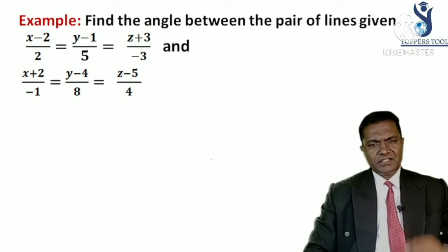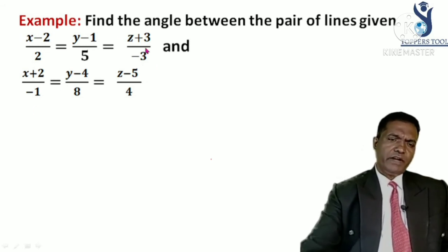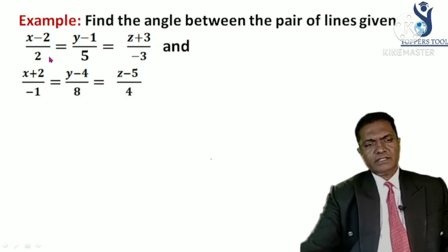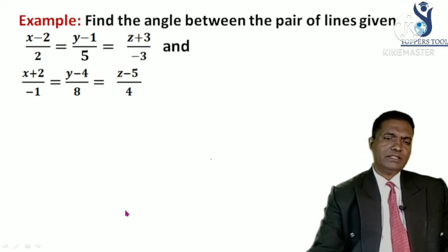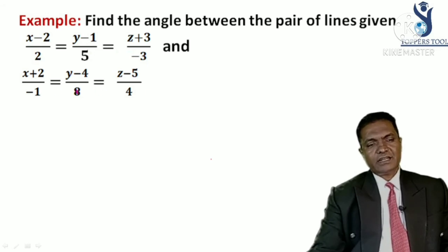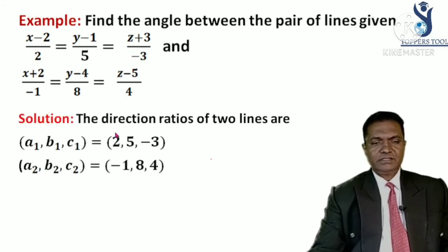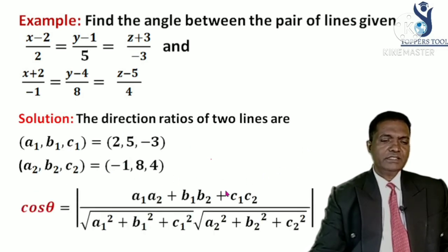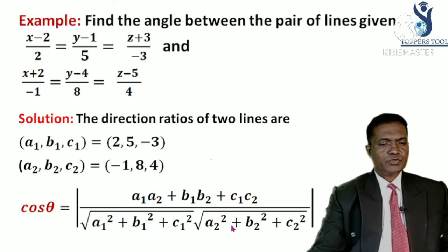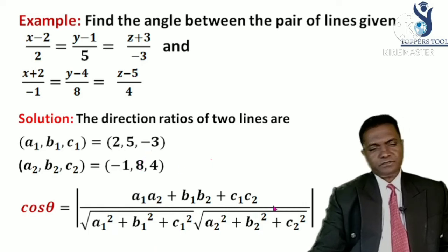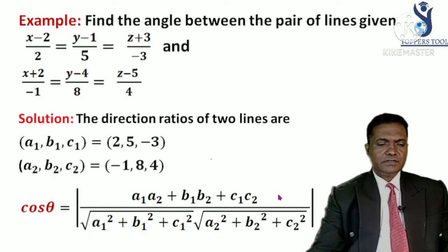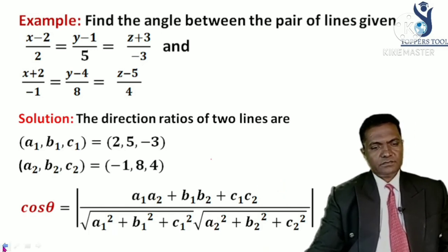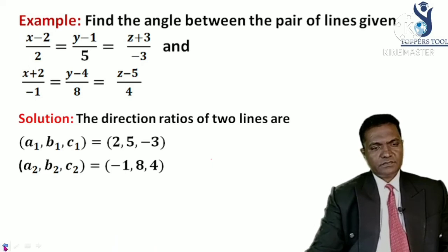Here is one more example in Cartesian form: find the angle between two given lines. Looking at the equations, the direction ratios of the first line are 2, 5, −3 and those of the second line are −1, 8, 4. Write the direction ratios and apply the formula: cos θ = (A1A2 + B1B2 + C1C2) / (|B1||B2|). Substitute A1=2, B1=5, C1=−3 and A2=−1, B2=8, C2=4 and simplify.